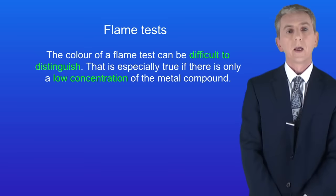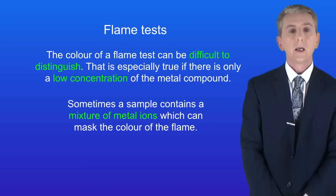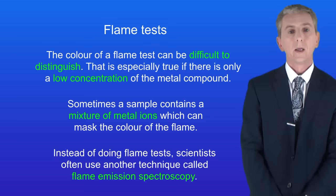Now there are several problems with using flame tests to identify metal ions. The colour of a flame test can be difficult to distinguish. That's especially true if there's only a low concentration of the metal compound. And sometimes a sample contains a mixture of metal ions and that can mask the colour of the flame. For example if a sample contains the sodium ion then the intense yellow colour can mask the colour of any other metal ion present.